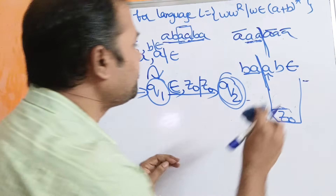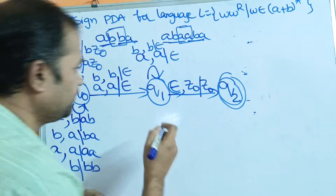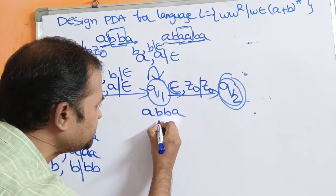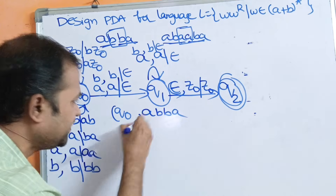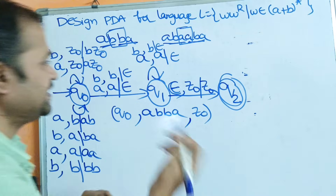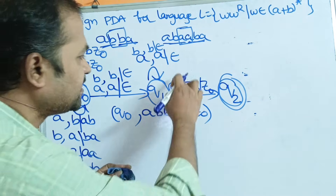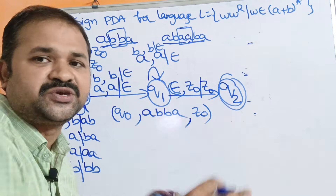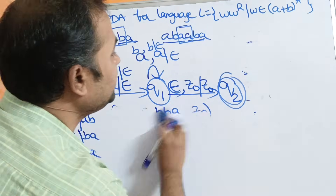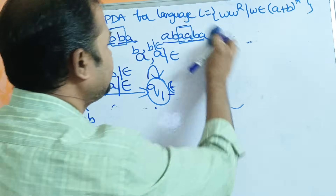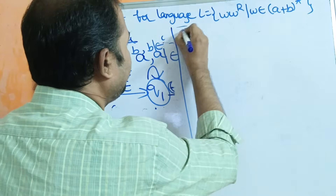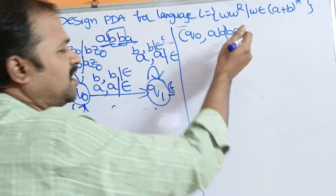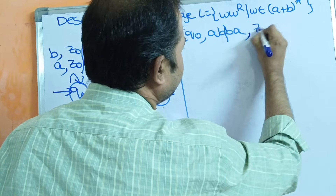Let us check whether our PDA is correct using the string ABBA. Q0 is the current state, the string is ABBA, and the stack is initially empty (Z0). On Q1, if the input symbol is epsilon and the stack's topmost symbol is Z0, we move to state Q2 with no change to the stack. So the input string is ABBA with the center between B and B.